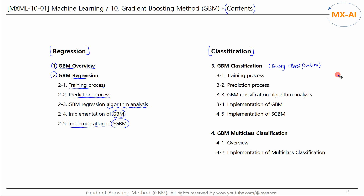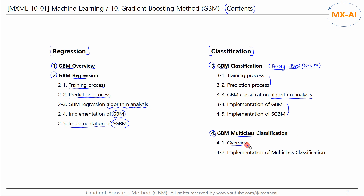Chapter 3 examines the binary classification algorithm of GBM. We will look at the training and prediction process, analyze the classification algorithm, and then implement it as code. And in Chapter 4, we will look at multiclass classifications — an overview and implementation in code.